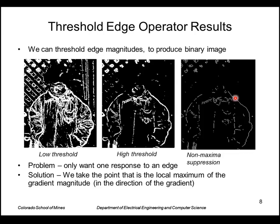We take the gradient magnitudes and look perpendicular to the edge, namely along the gradient direction, and just take the point that is a local maximum in that direction. So that gives us a single pixel wide edge as shown here.